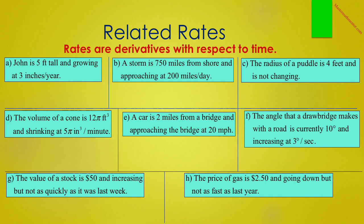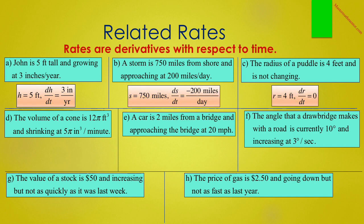We see eight statements that give mathematical information. We need to write these as equations with proper variables. It is important that we label the units as well. In A, John is 5 feet tall and growing at 3 inches per year. I choose H to represent John's height, and therefore H is 5 feet, and DH/dt is 3 inches per year. In B, a storm is 750 miles from shore and approaching at 200 miles per day. I'll choose S to represent the distance from the storm, so S is 750 miles, and DS/dt is negative 200 miles per day.